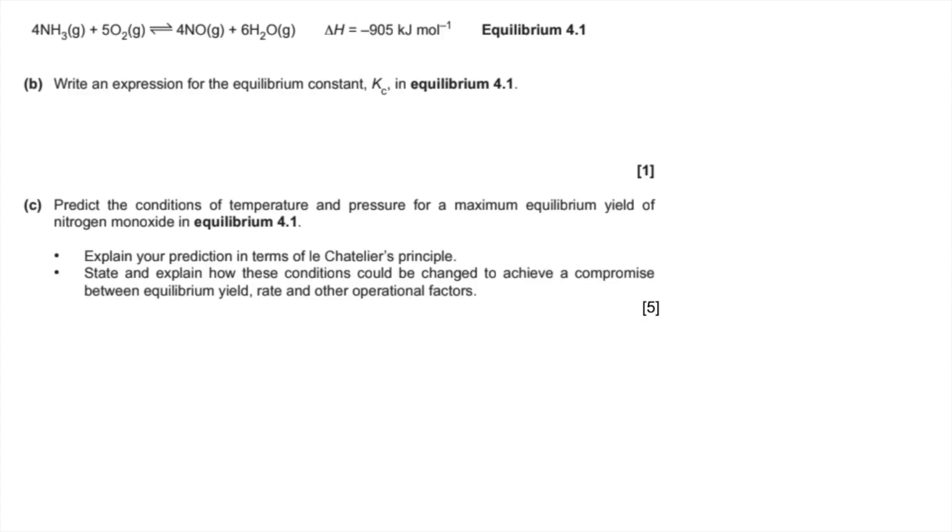Part B now. We've got to write an expression for the equilibrium constant KC for this equilibrium. Remember KC is the concentration at equilibrium of the products divided by the reactants, but the coefficients in the equation become powers.